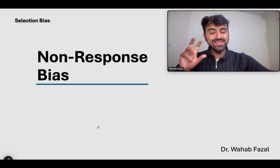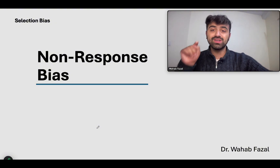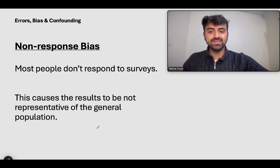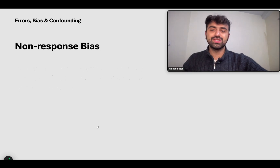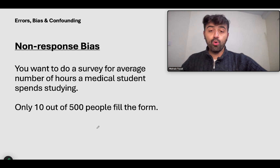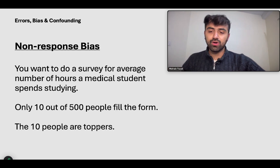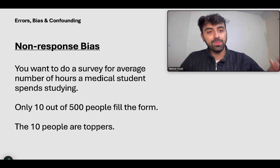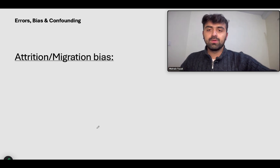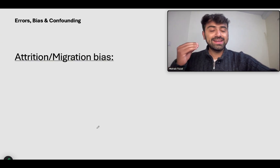Non-response bias is kind of similar to attrition bias, but not quite the same — non-response bias is about surveys and people not responding. Let's take an example: you want to survey the average number of hours medical students spend studying. Only 10 out of 500 people in your medical college fill the form. These 10 happen to be the toppers or the people currently studying for their USMLE exams. That result is now not representative of the general population.